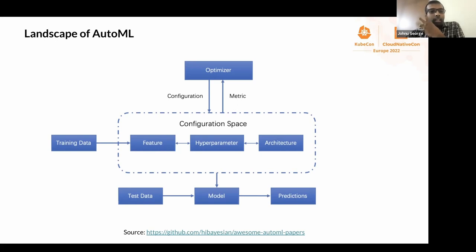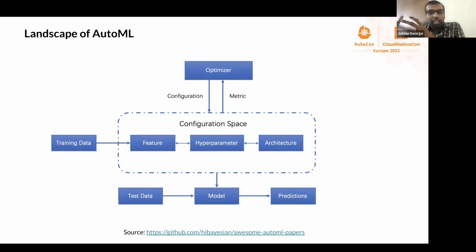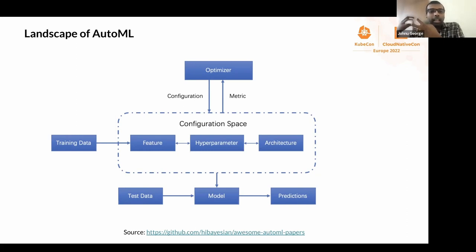When we consider AutoML from a components point of view, we can think of multiple components. One is the main configuration space. Different subdomains deal with different configurations: feature engineering deals with features, hyperparameter tuning deals with hyperparameters, and neural architecture search deals with model architectures. Training data is passed in, new metrics are emitted from models based on the configuration, and using these metrics, the optimizer creates new configurations. This loop continues till some success criteria is met, and the end result is a well-optimized ML model.